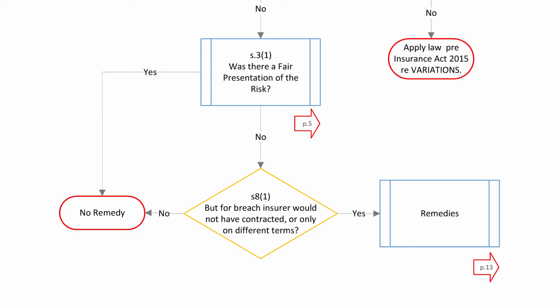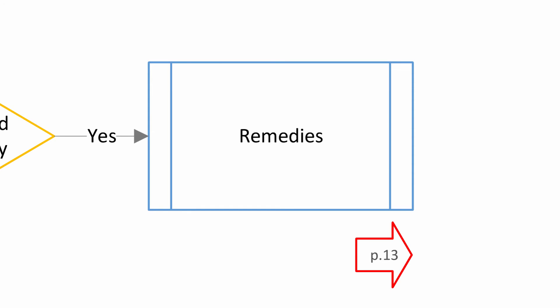You should go on dealing with other policy issues and adjust the claim in accordance with the policy's terms. However, if the insured did not present the risk fairly, then follow the no arrow down. You then have to establish whether the breach caused the policy to be contracted on different terms. If underwriters tell you that the breach of the duty of fair presentation made no difference to their underwriting, then you head left along the no arrow — again, you have no remedy. However, if underwriters would have contracted differently, with different terms, increased premium, or they would have passed on the opportunity to write at all, then follow the yes arrow. At this point you would turn to page 13 to see how the remedies provided by the Act apply. That is worthy of a video of its own, so I won't cover it here.